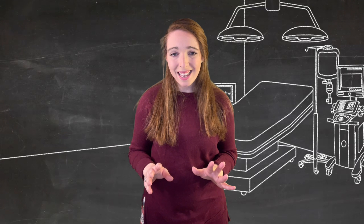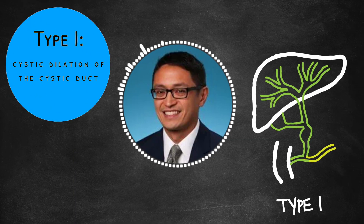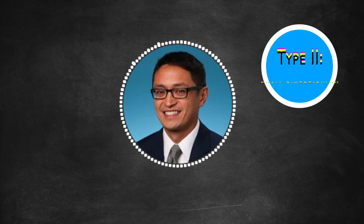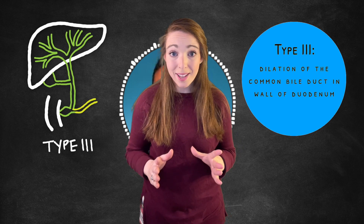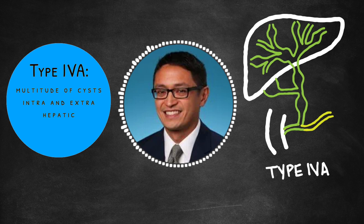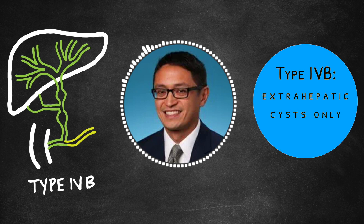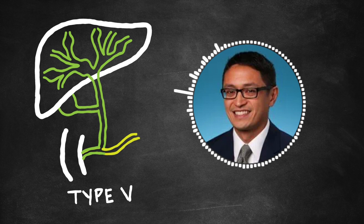Let's dive into the Todani classification. A chart with all images is linked below the media player. Type 1 is a dilation of the extrahepatic common bile duct only, and that can either be fusiform or saccular. Type 2 is just a small diverticulum off of the common bile duct. Type 3, or a choledochocele, is a dilation of the common bile duct in the wall of the duodenum. Type 4a involves multiple cysts in both the intra- and extrahepatic biliary tree, while type 4b are multiple cysts in the extrahepatic biliary tree only. Type 5, otherwise known as Caroli's disease, has diffuse cystic dilation — this can be diffuse throughout or limited to one lobe of the liver.